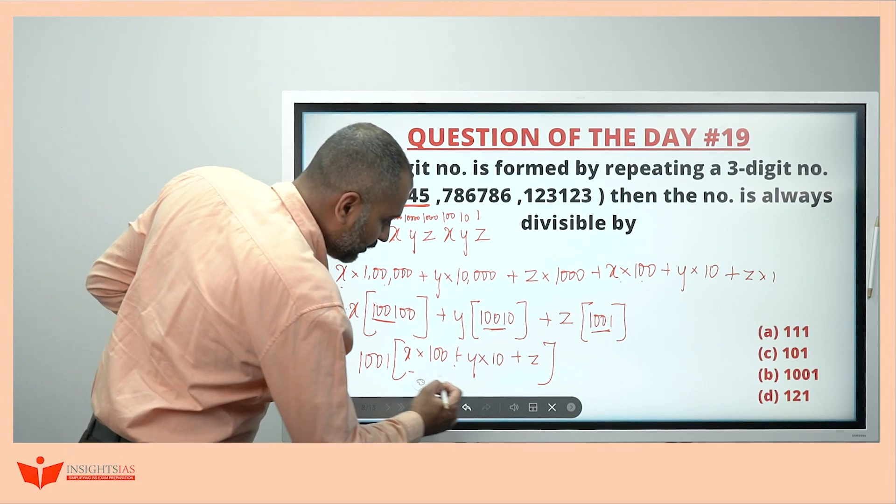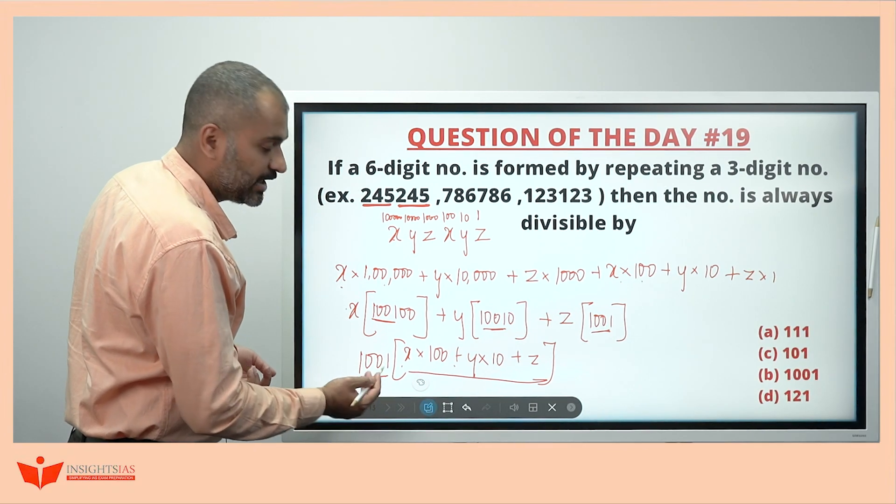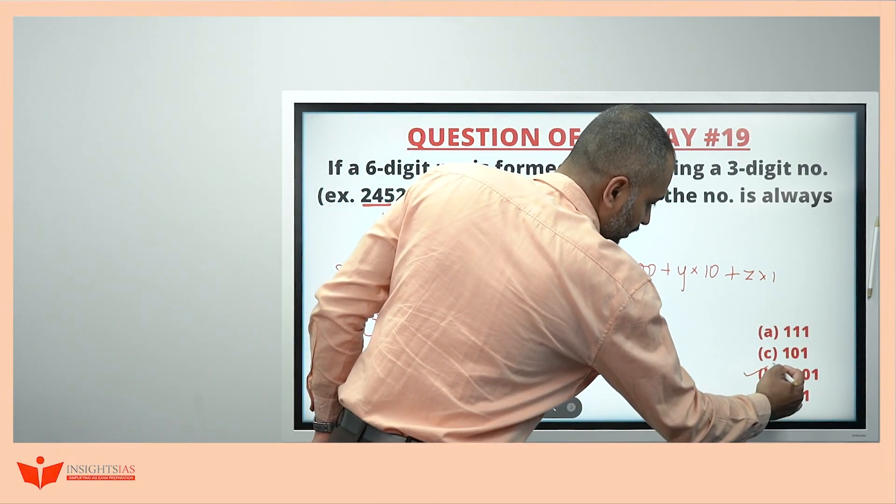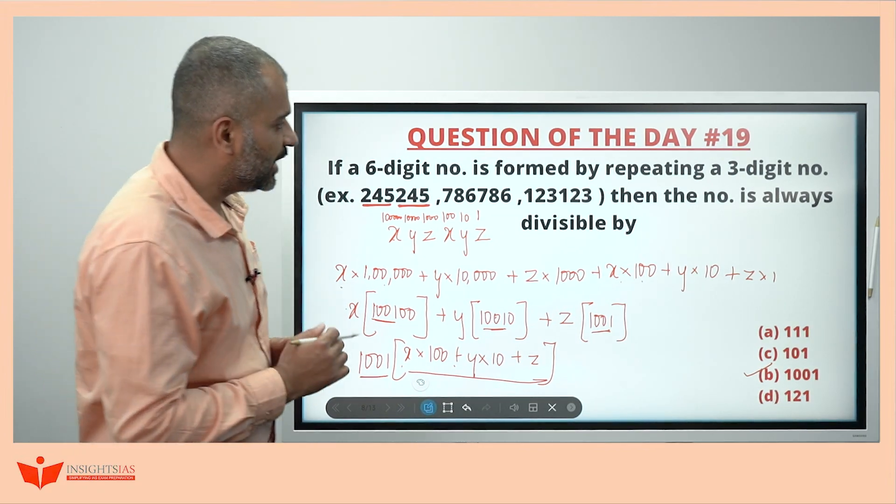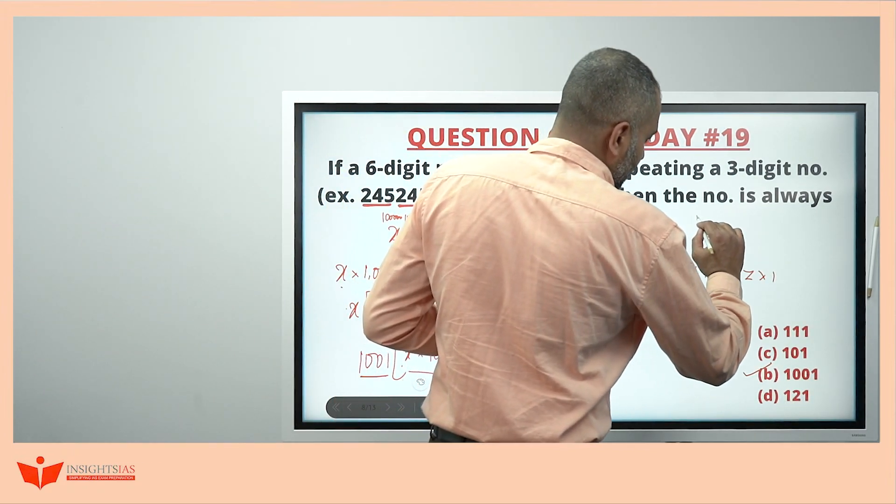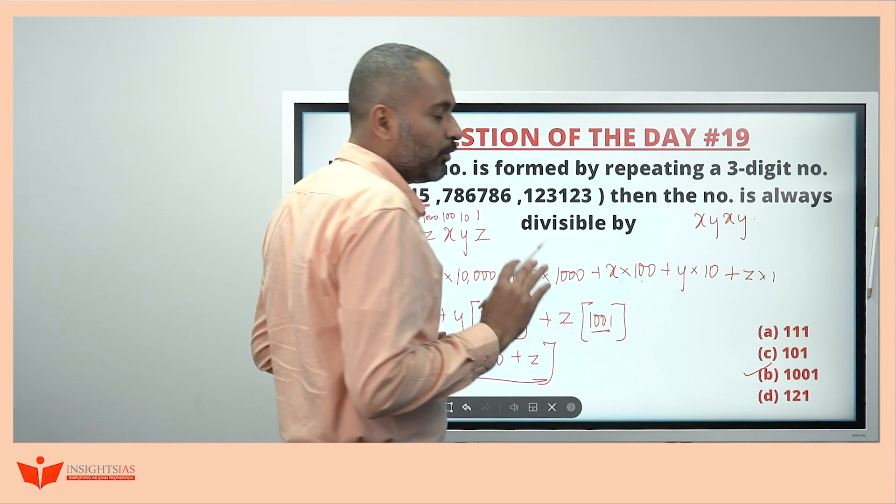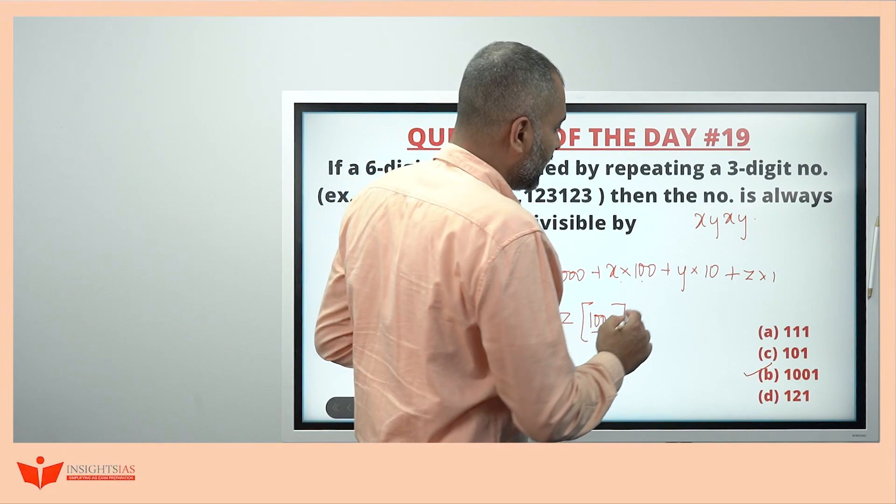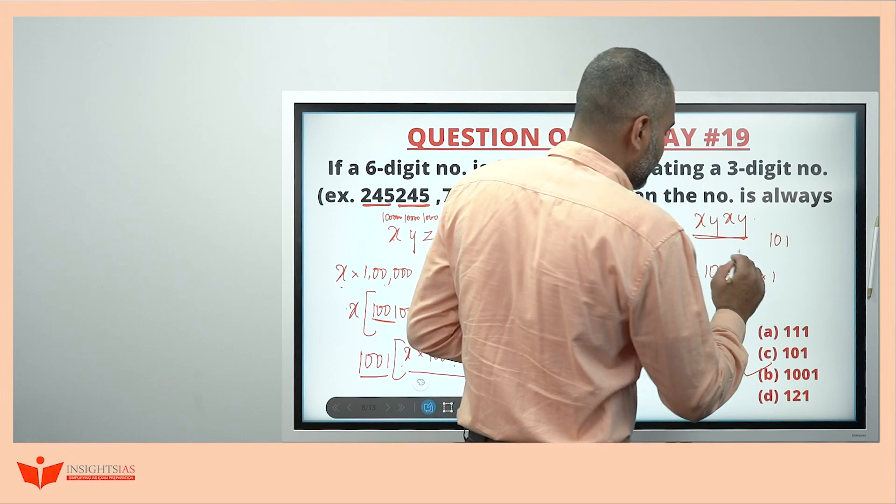If this whole number is a multiple of 1001, then this number has to get divided by what? 1001 only. Isn't it? The answer is 1001. Similarly now, if 2 digit numbers are repeated and formed a 4 digit number, then this number is completely divisible by always 101.